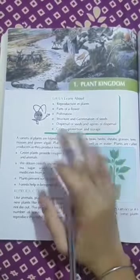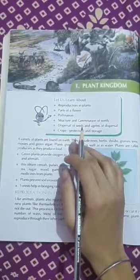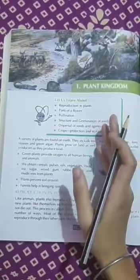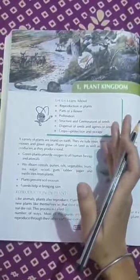Some advantages of plants are: plants provide oxygen to all living organisms. They give food, shelter, medicine, oil, gum, rubber, etc.